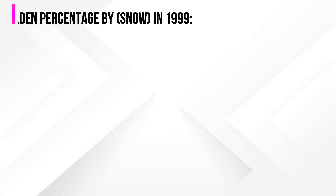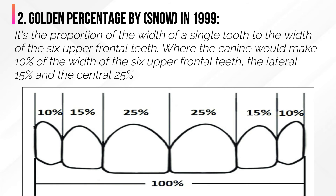The second one is the golden percentage by Snow. It is the proportion of the width of a single tooth to the width of the six upper frontal teeth, where the canine would make 10% of the total width of the six upper frontal teeth, the lateral incisor would make 15%, and the central incisor would make 25%.